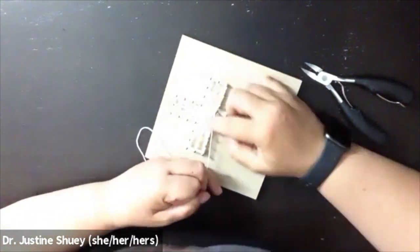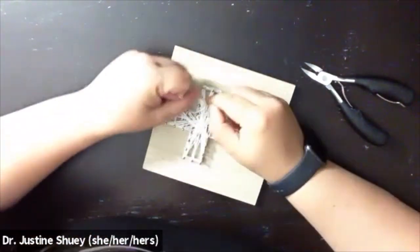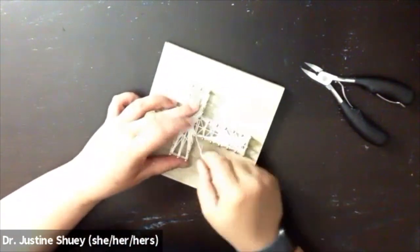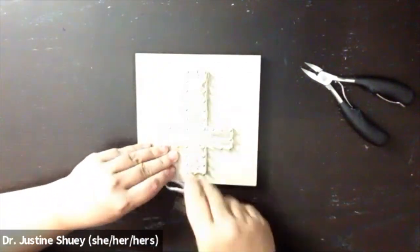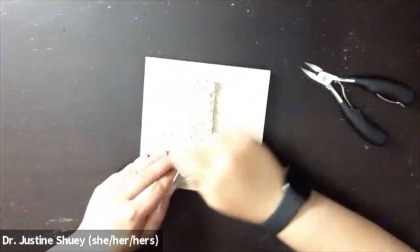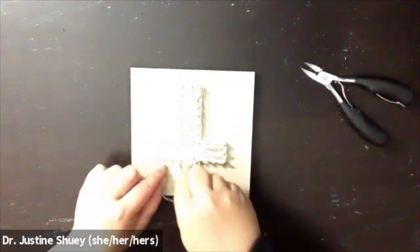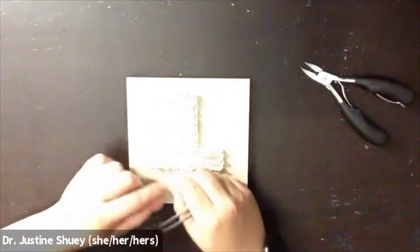Once I run out of string I will tie a double knot on one of my nails, make sure it's really secure, and then trim off my excess string and I'm done.